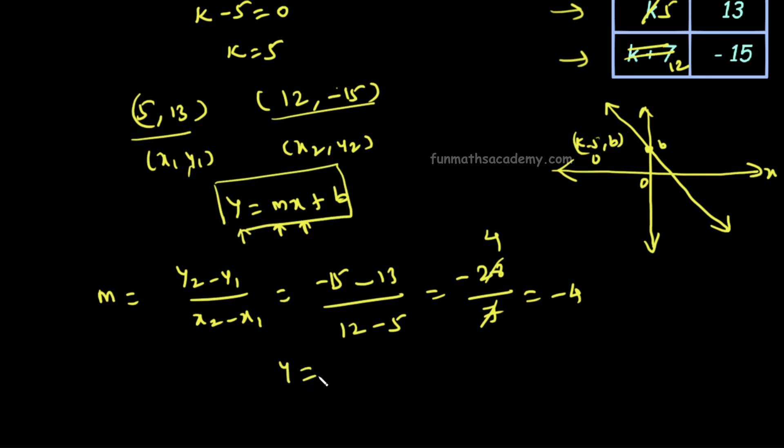In the equation, y equals minus 4x plus b. Now we substitute the y value and x value. The two points on the line, one is (5, 13) and one is (12, -15).